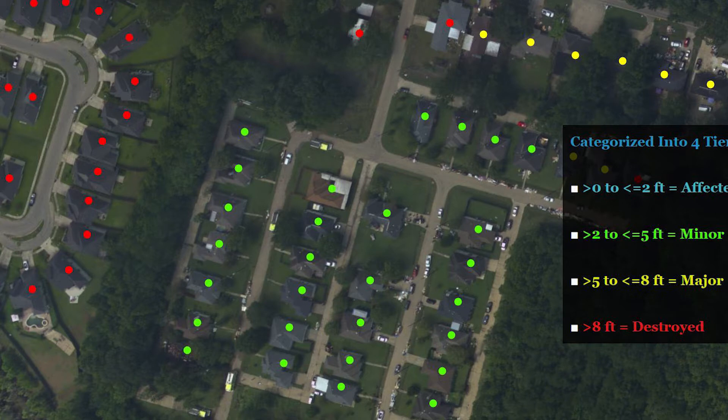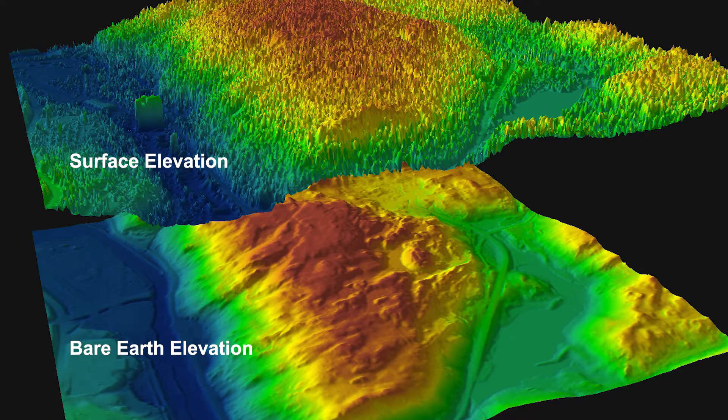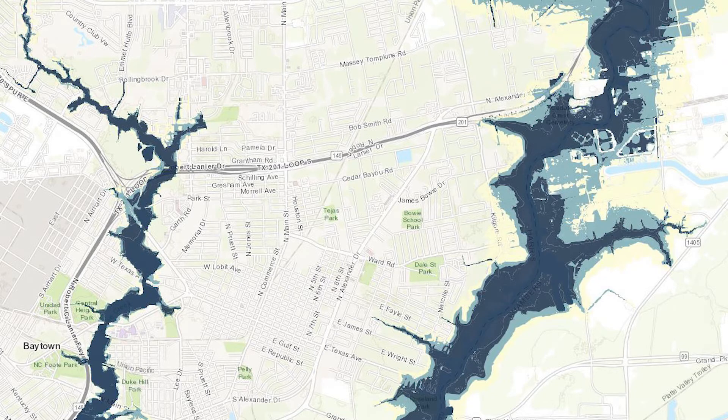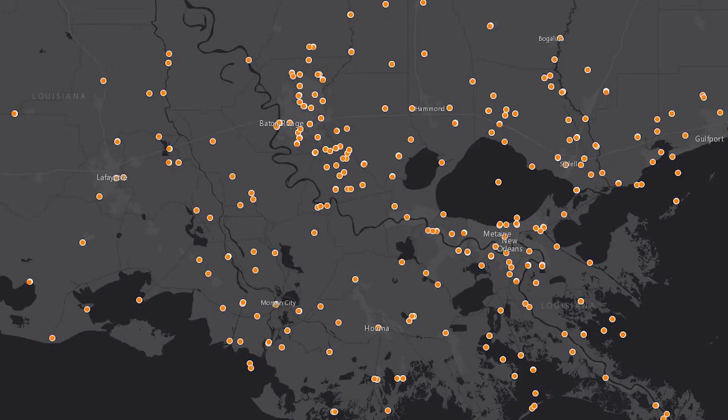That includes things like structure information so you understand the impact on structures, elevation data so you understand what the bare earth is going to be, the event data, and the flood depth levels from riverine gauge stations. Then you start the modeling process and couple that information together, and you need to validate that information using post-event imagery and then output the results.